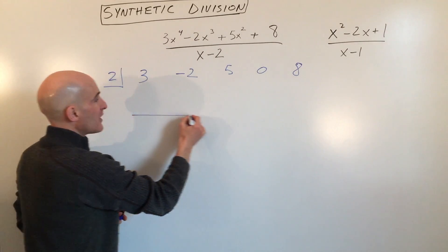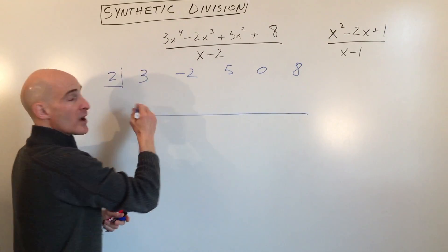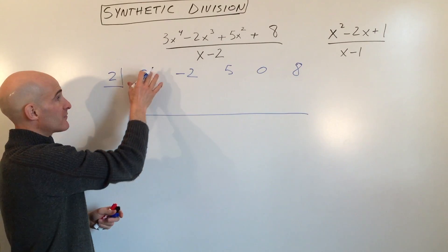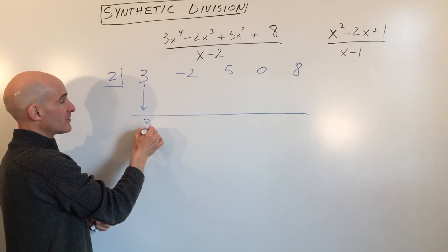Then what I do is just draw a line like so, and this is the first step. Sometimes students forget this. You want to drop down that first term. So whatever this number is, just bring it right down like that.